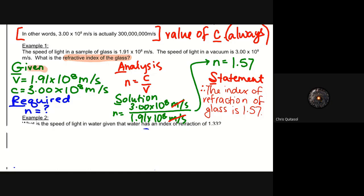But our calculations state that that is the index of refraction of glass is 1.57. So also if you noticed, I use what's called the GRASS method, given, required, analysis, solution, statement, G-R-A-S-S. If you've never used that before and you have no idea what I'm talking about, that's perfectly fine. As long as you're showing me all your steps, I'm fine with that.